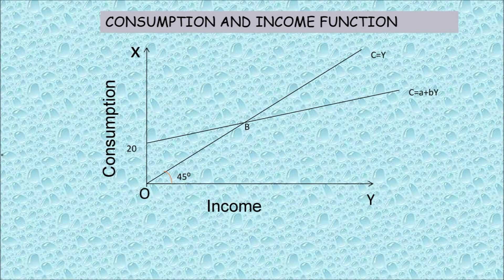Now a new line appears at point 20, and it passes through the C equals Y curve. This curve is called C equals a plus bY. This value of 20 — that is, 0 to 20 — is also called autonomous consumption.